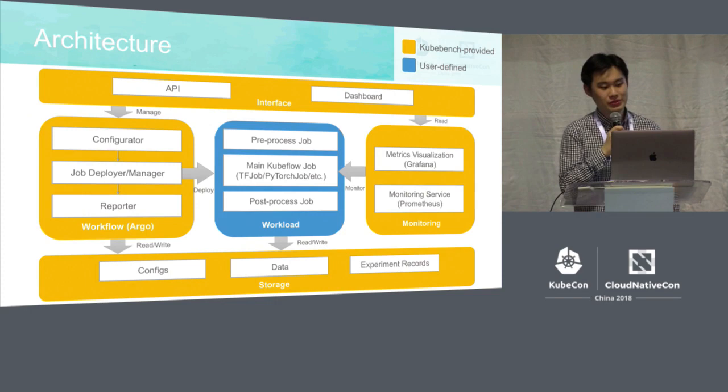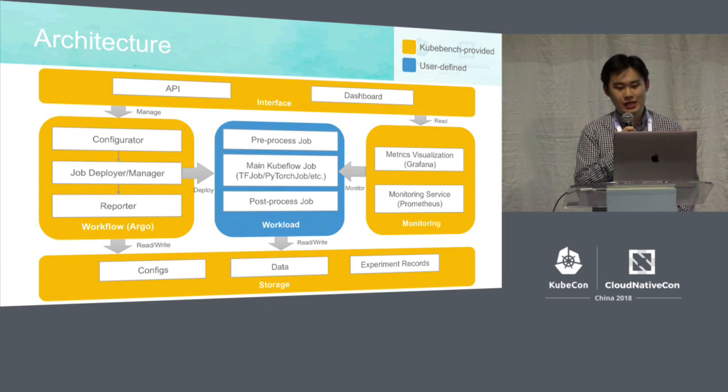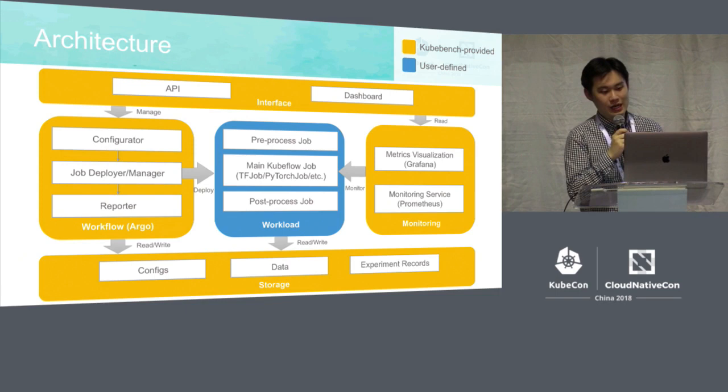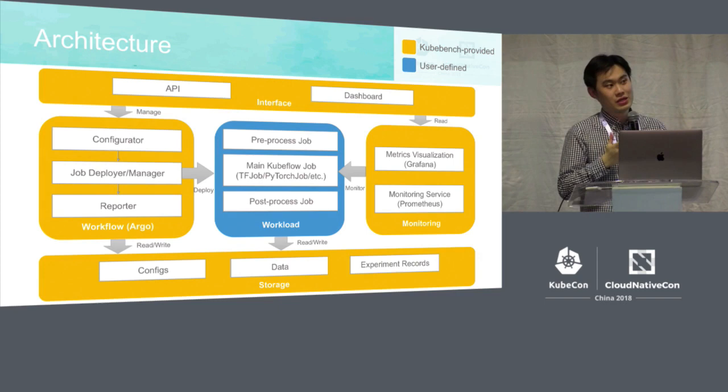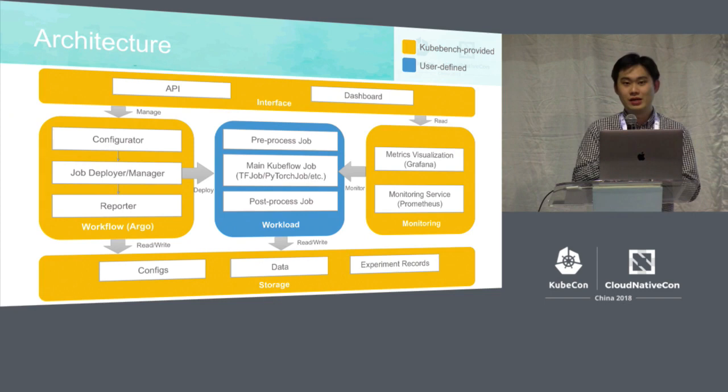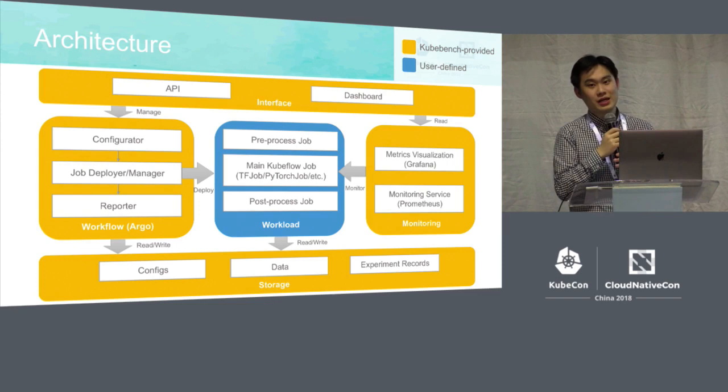This is a deeper look into the Kubebench architecture. The yellow part is the functionality provided by Kubebench, and the blue part is what is user-defined. As a user, what you need to provide is basically the main code that runs in your machine learning job to be benchmarked, and also a little bit more code that processes your outputs to get benchmark numbers.